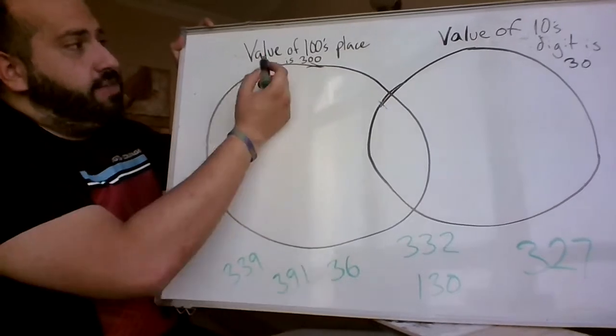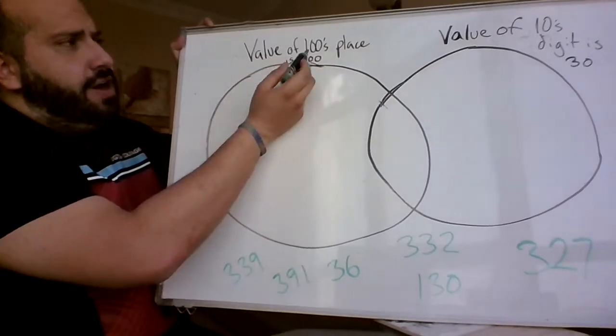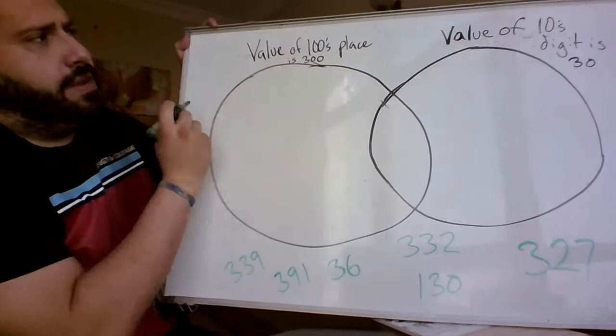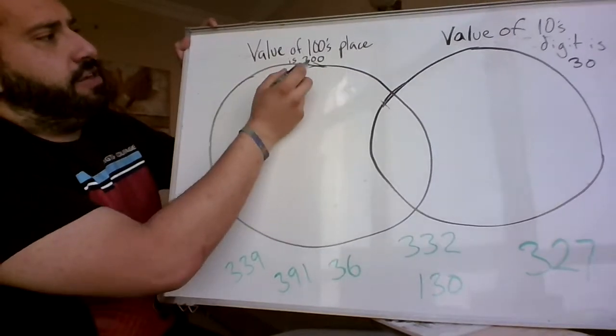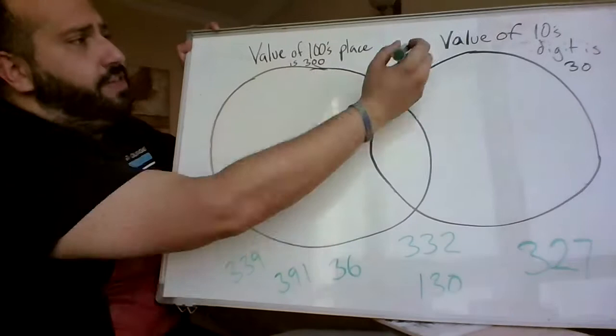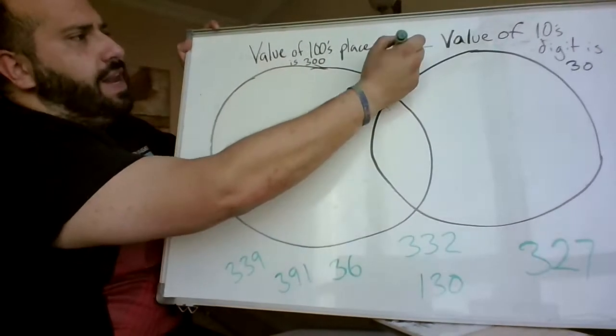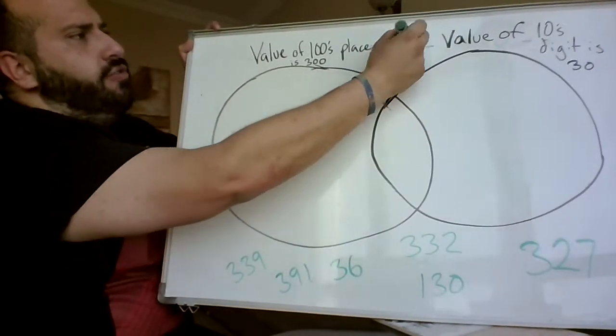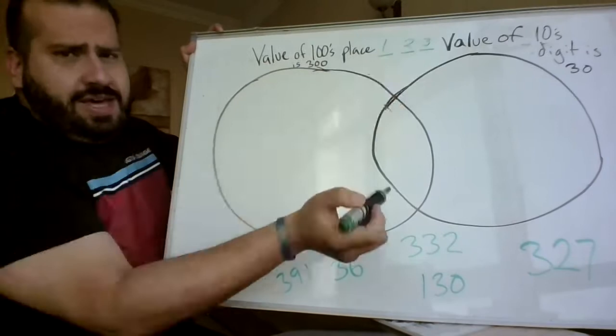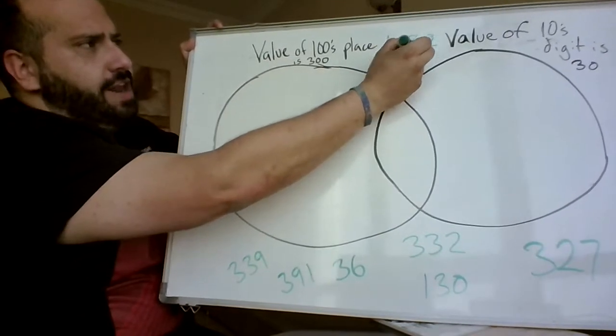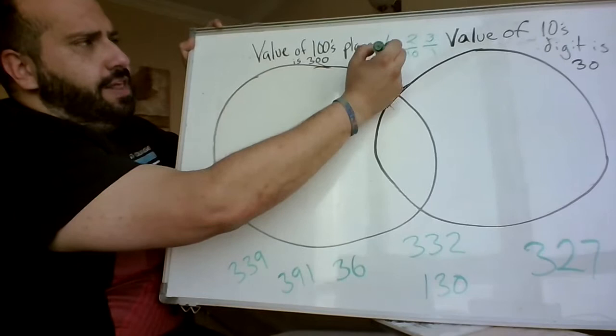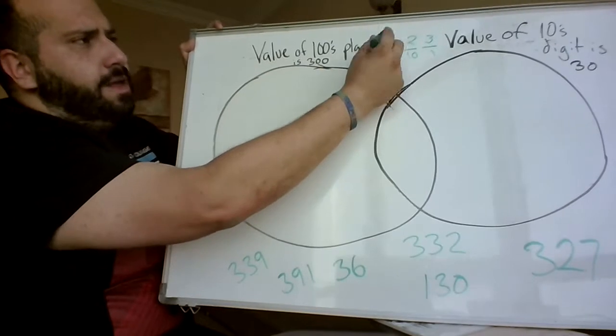So we're looking for numbers that have a value. Oh, and the value in the 100s place is 300. So remember, our place values with numbers from right to left. So the number 123 in the 1s value is a 3. The 10s value is a 2. And in the 100s value is a 1.